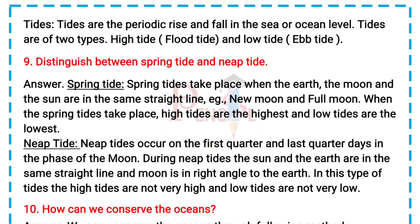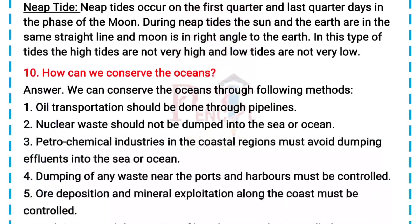Neap tide: Neap tides occur on the first quarter and last quarter days in the phase of the moon. During neap tides, the sun and the earth are in the same straight line and the moon is at right angle to the earth. In this type of tides, the high tides are not very high and low tides are not very low.